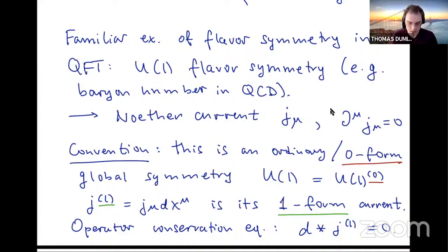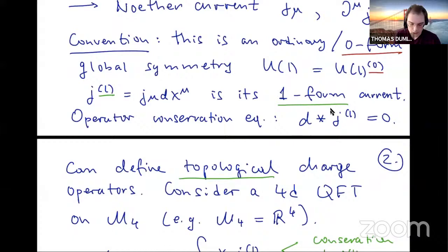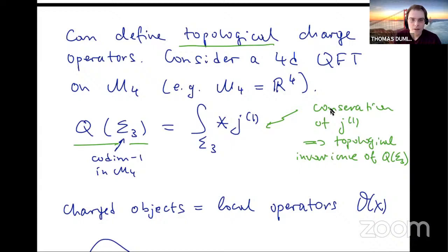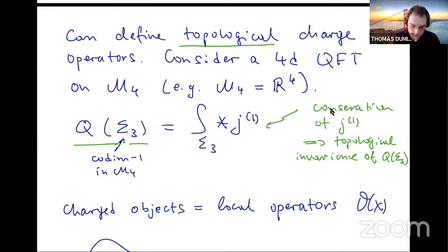I'm going to follow the now common convention that this kind of gadget is to be called an ordinary or zero-form global symmetry, putting a little superscript zero on the U(1) to remind you of that. The superscripts in this talk will always be a reminder of the form degree of various objects. For instance, the conserved current is a one-form, J superscript one. And the operator conservation law can be written in form notation. I'll be in four dimensions for the first part of the talk, taking spacetime to simply be flat R^4.